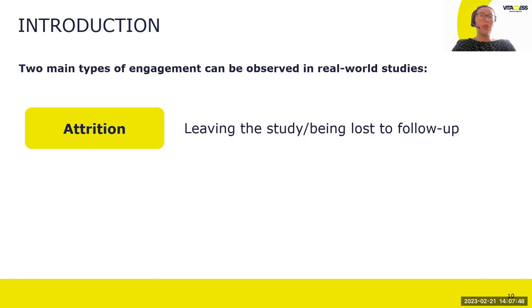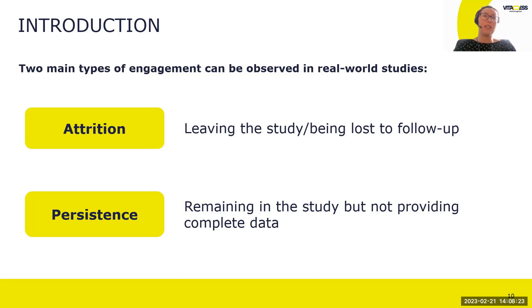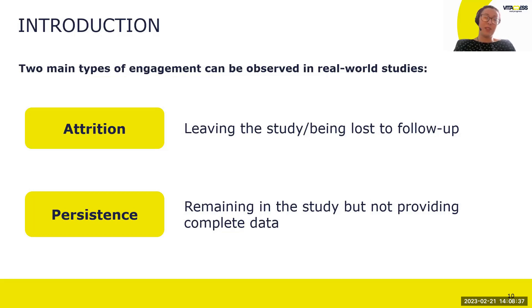There are two main types of engagement challenges in real-world studies. The first is attrition — leaving the study or being lost to follow-up. The second is persistence — remaining in the study but not providing complete data. There is crossover between retention and engagement, and both are in play throughout the study. Retention is keeping participants in the study; engagement is whether they are opening and completing their surveys. If people stop completing surveys, there's a window to get them back before it becomes a retention problem.